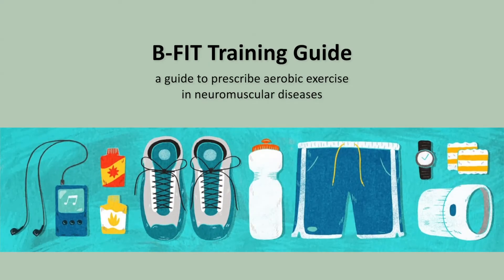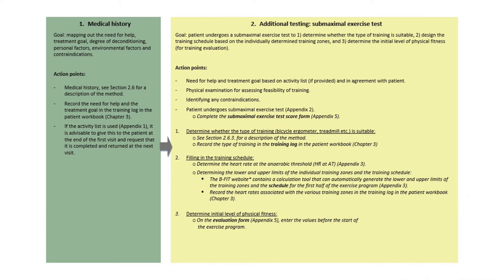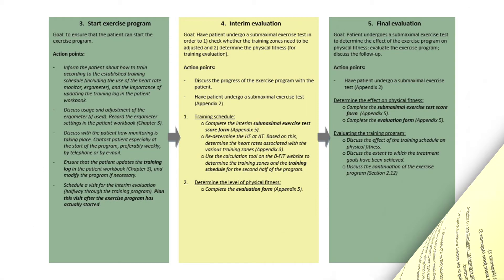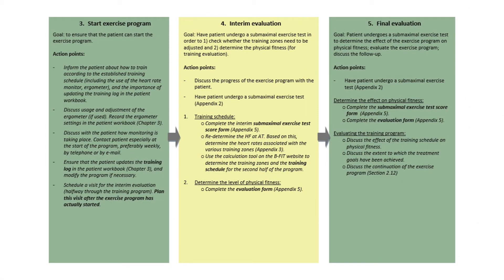The BFID training guide supports practitioners to prescribe and evaluate individualised home-based aerobic exercise in slowly progressive neuromuscular diseases. This instruction video explains all the required actions by the physical therapist or other supervisor, based on the five visits as described in the manual for therapists.